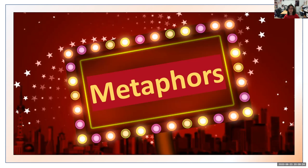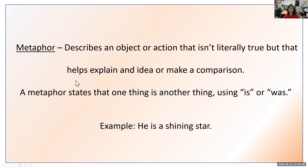Next up is a metaphor. A metaphor describes an object or action that isn't literally true but helps explain an idea or make a comparison. A metaphor states that one thing is another thing using 'is' or 'was.' For example, 'He is a shining star' — it's comparing him to a star. Similes use 'like' or 'as,' whereas metaphors use 'is' or 'was.'